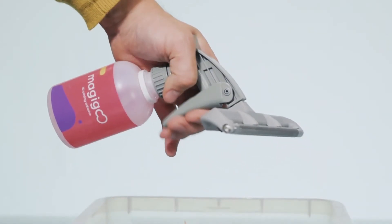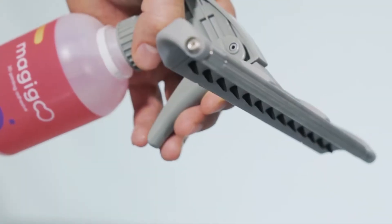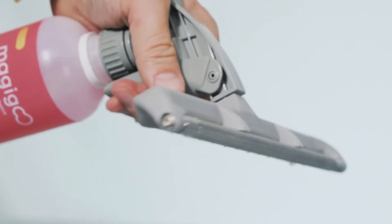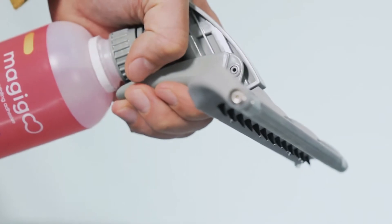Prime the Coater to ensure that the Magigoo adhesive makes it through the pumping system and the nozzles. Actuate the pumping head repeatedly until the adhesive starts flowing out from each valve.